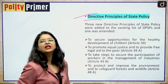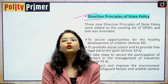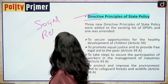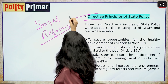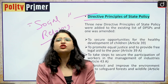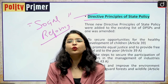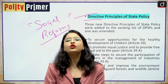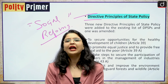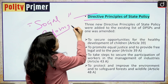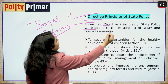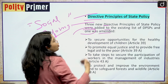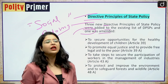Moving forward to the directive principles of state policy — the government was trying to have some social reforms, and this was being done from the 1st Constitutional Amendment Act itself. They were trying to have precedence of directive principles of state policy over fundamental rights, which was a point of tussle between the government and the Honourable Supreme Court. Basically, three new directive principles of state policy were added to the existing list of DPSPs and one DPSP was also amended through the 42nd Constitutional Amendment Act.